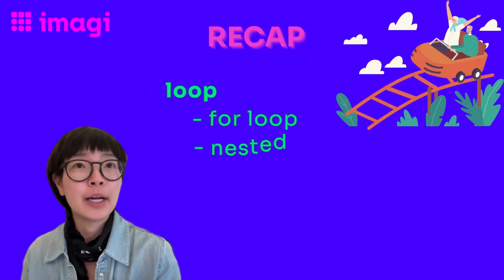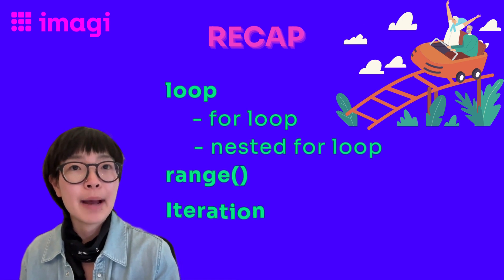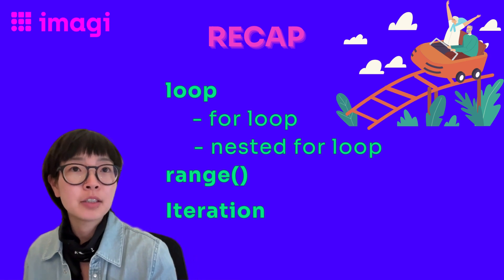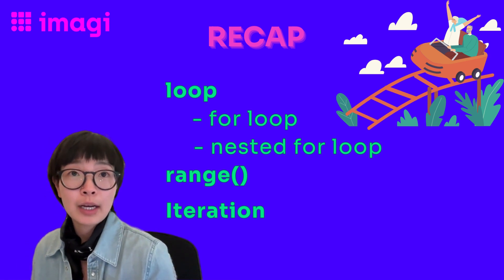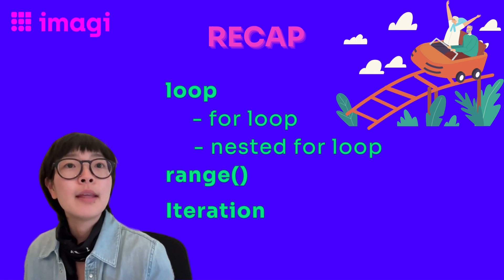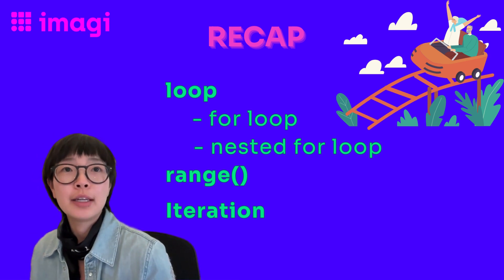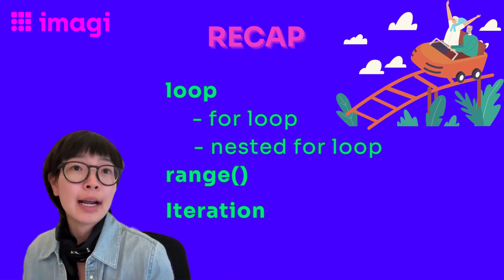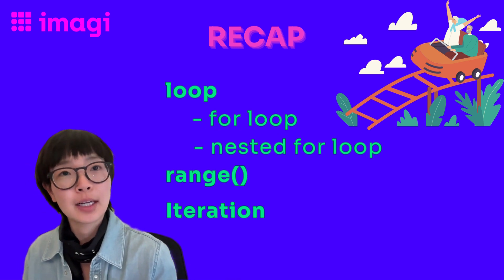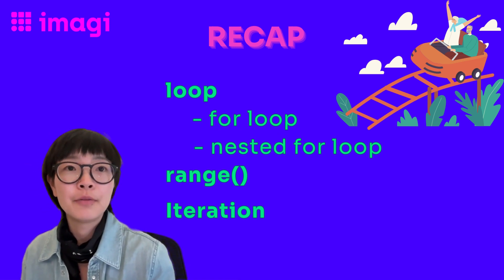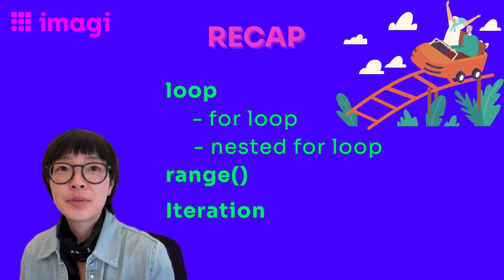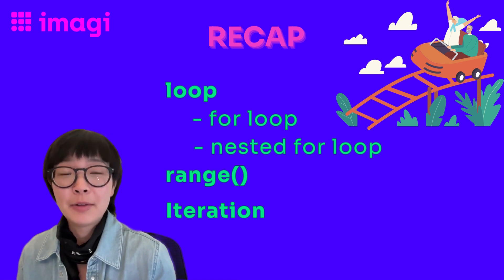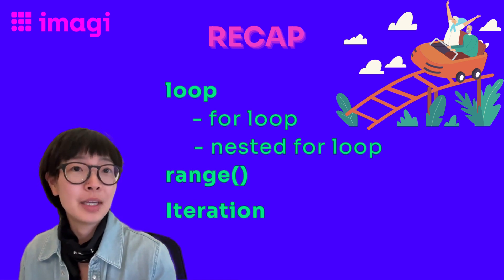Wow, we've really covered quite a bit. Let's hit the brakes and do a quick recap. First, we learned about loops — think of them like a roller coaster ride. They let us repeat parts of our code over and over again, much like going around the roller coaster track again and again. Then we moved on to for loops, the control freaks of the loop family. These guys need to know exactly how many times they're going around the track — that's where our trusty range function comes in. It sets the number of laps for our for loop. Next up, nested loops. These are like loops within loops, or a roller coaster within a roller coaster. They let us perform loops for each item in another loop.